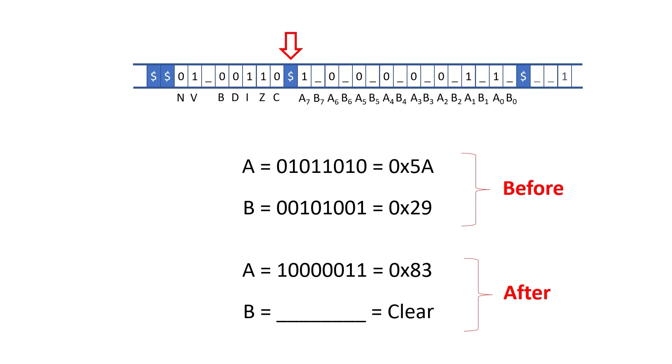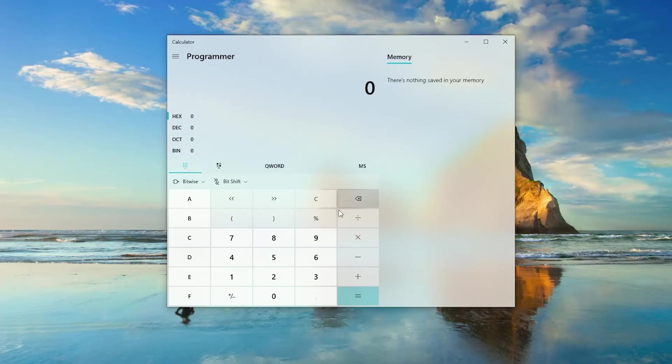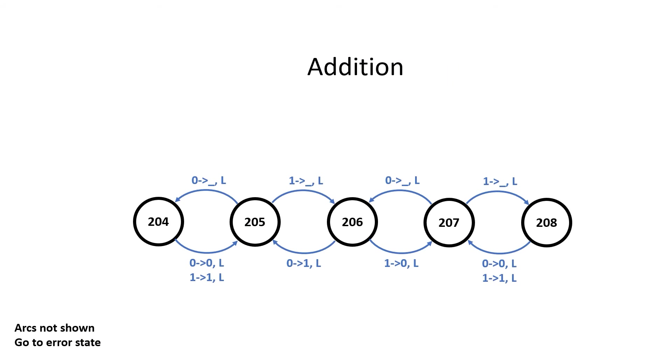Let's examine what's happened to our tape in this process. We started with 5A and 29 in A and B respectively. And at the end of the process, A contains 83 and B contains underscores, which means it's clear. If we pull out our handy hexadecimal calculator, we can see that 5A plus 29 equals 83. How about that? This simple set of rules performs a bit sequential addition.